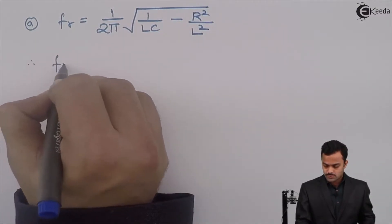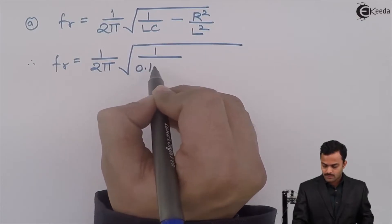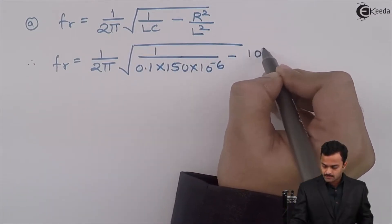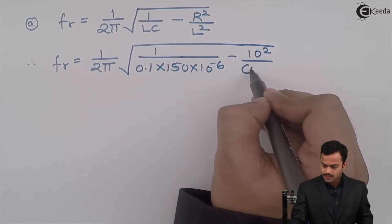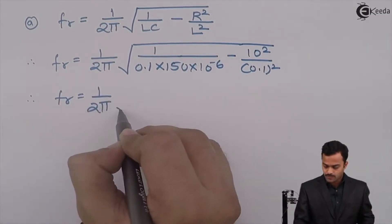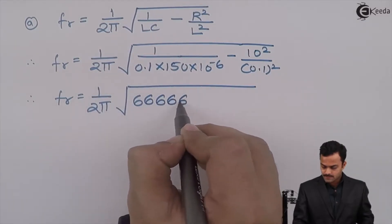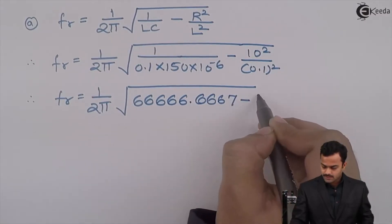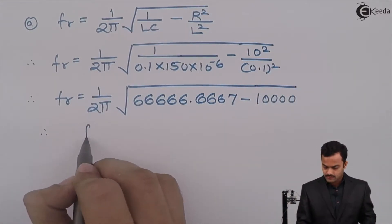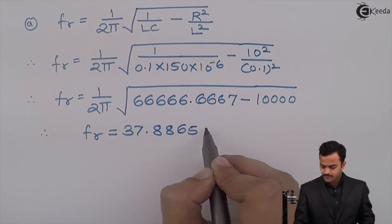All the values are known so I can just substitute. L is 0.1, C is 150 microfarad, r is 10, L is 0.1. So further if I simplify what I will get: 1 upon 2π root of 66666.6667 minus 10000. So if we solve further we will get resonating frequency 37.8865 hertz.